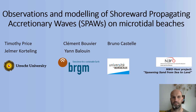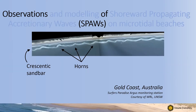Let's further reduce the length of the title of this talk and have a look at some observations of spores. Here we see a plan view from the Argus video monitoring station at Surfers Paradise on the Gold Coast in Australia. The white areas in this image correspond to areas of wave breaking and they indicate the position of the shallow sandbar below. This particular image shows a perfect example of a crescentic sandbar with a regular longshore alternation in cross-shore position. The more onshore-directed parts of the bar are known as horns, and from these horns, spores have been observed to emerge during more energetic conditions.